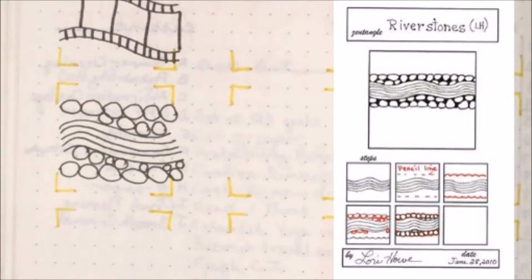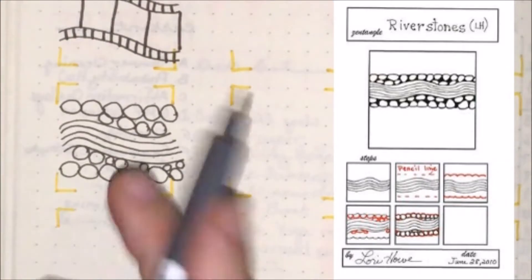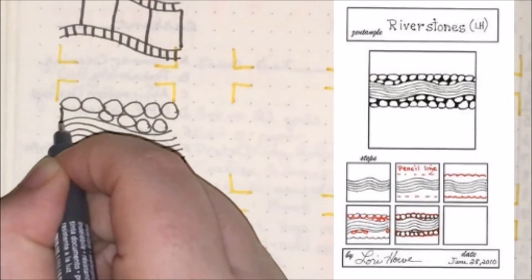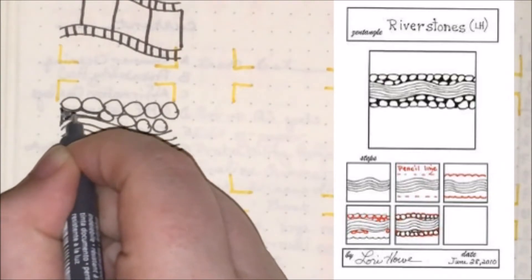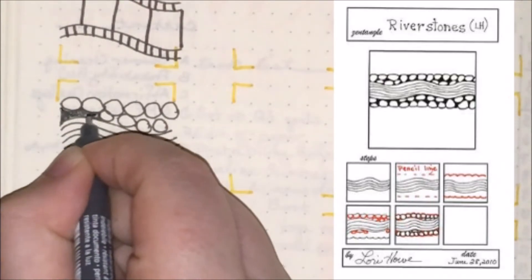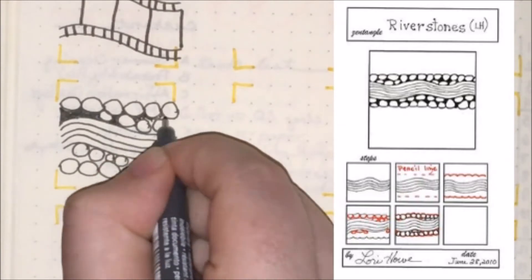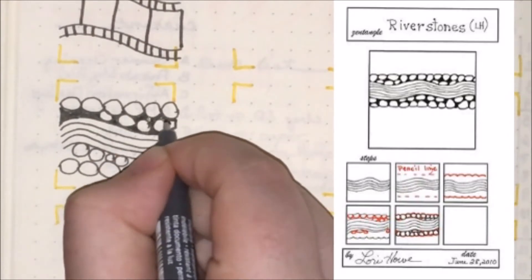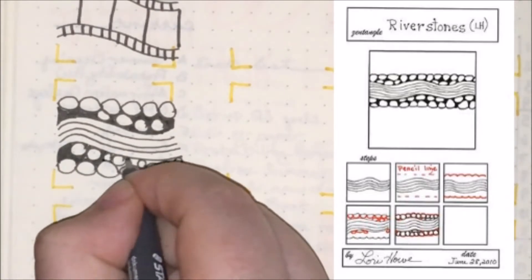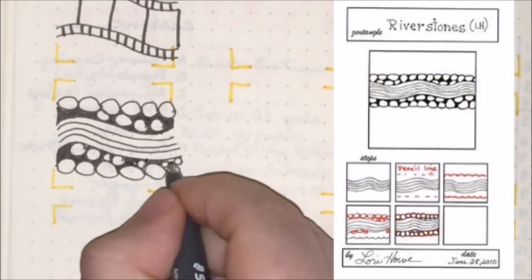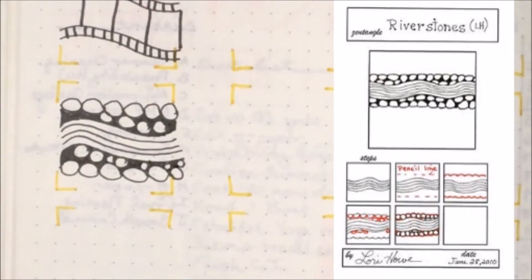Another suggestion—and this is what's given in the example off on the right-hand side—is to come in and fill in the blank space with just your pen. And just like that, we've completed Riverstones.